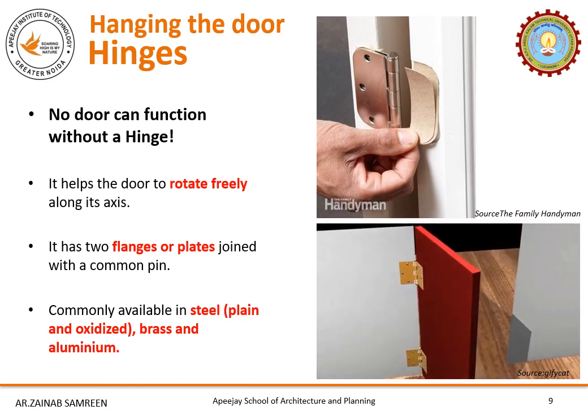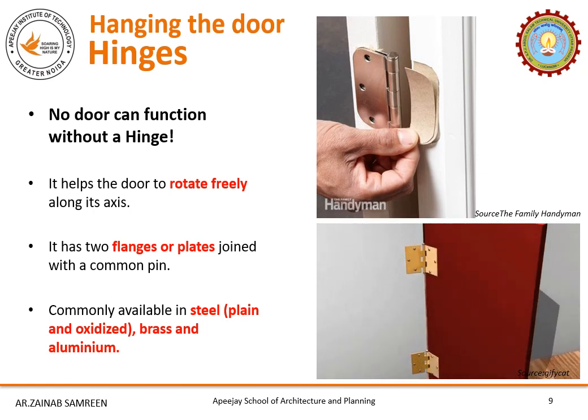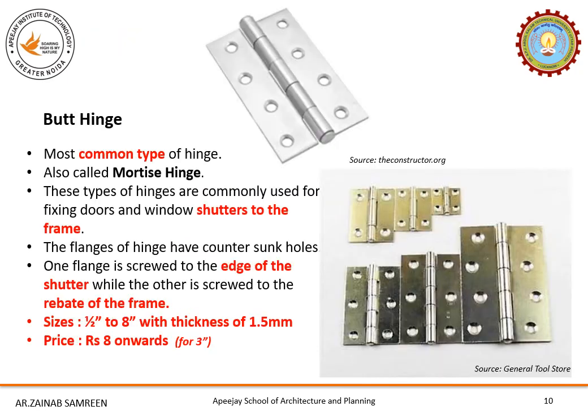To fix the hinge on the frame and on the door, first we mark the positions of all three or four hinges. Then we cut a niche of about 2 mm depth on both so that it sits flush with the surface. Lastly, we screw one plate of the hinge to the door and one to the frame. This process has been described for a very common hinge — the butt hinge. There are many types of hinges available in the market.